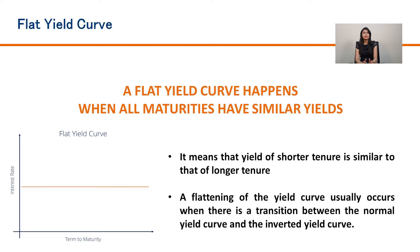The flat yield curve is one where short-tenure and longer-tenure securities pay the same interest rate, with no interest rate differential between the two maturities. This generally happens when the economy is in a transition phase, switching from a normal yield curve to an inverted yield curve or vice versa.